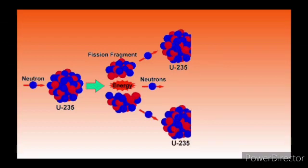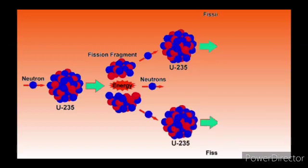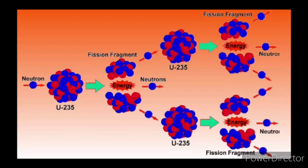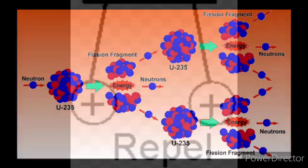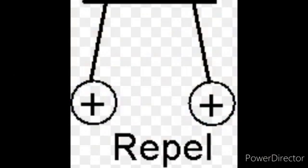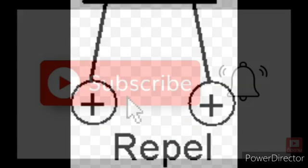Before the discovery of neutrons, the only thing that could break the nucleus and cause fission was the proton. But the problem with protons is that protons have positive charge. If you bombard a particle with positive charge, which is a proton, on a nucleus of an atom, which has again a proton inside it, the positive charges will repel each other. This is the reason Einstein thought nuclear weapons were impossible.